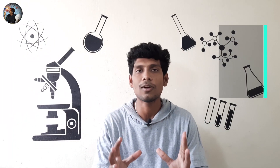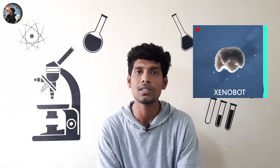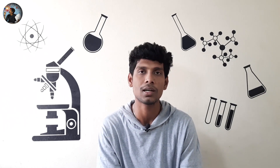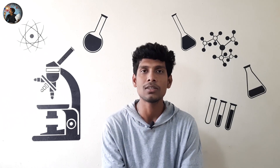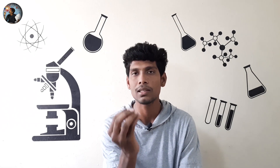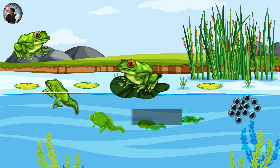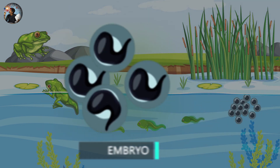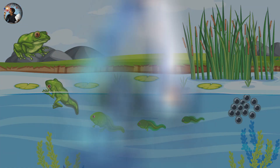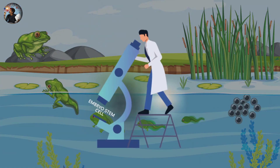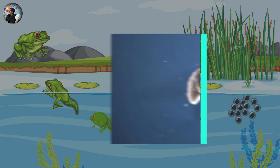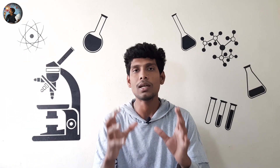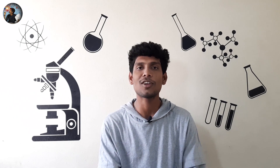Xenobot. It is a little stylish name — why do we call it this? It is a robot made of cells, like the cells we have in our body. It is named after Xenopus Laevis, which is a frog found in Africa. From Xenopus Laevis, the name Xenobot is derived.